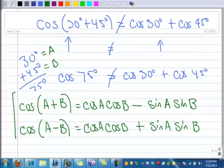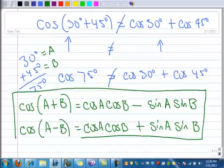So these are considered your cosine sum and difference identities. Obviously, the one with the sum is the one with the plus, and the one with the difference is the one with the minus.